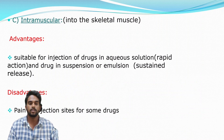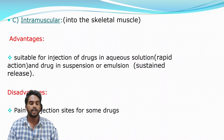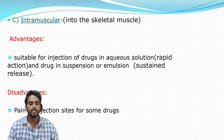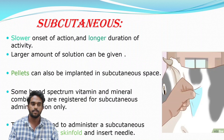Intramuscular injection is administered directly into the skeletal muscle. Advantages include suitability for drugs in aqueous solution and drugs in suspension or emulsion form. Disadvantages include pain at the injection site for some drugs.